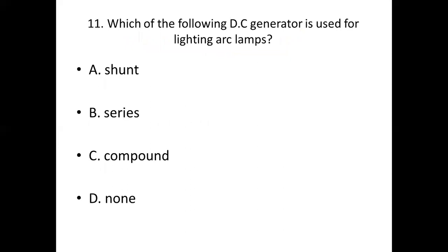Eleventh bit. Which of the following DC generator is used for lighting arc lamps? Option A: Shunt. Option B: Series. Option C: Compound. Option D: None. Answer: Option B, Series.